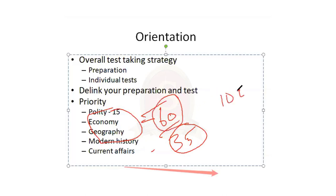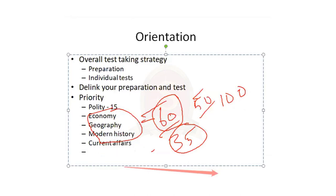In 60 questions, average cutoff is around 100 marks. If 50 questions from core subjects plus current affairs come, you can clear the examination — so cover the major areas plus current affairs and you're already in a strong position. Many students miss prelims by two, three, or four marks — that's because in one of these subjects they completely left it or didn't complete preparation. The principle I give you: cover as much as possible. Don't stagnate.